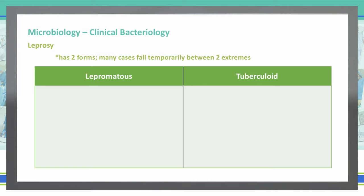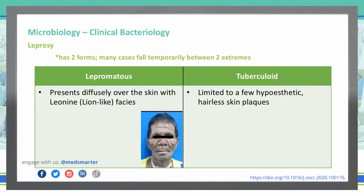The lepromatous form presents diffusely over the skin with a leonine, or lion-like, face. You can remember that the lion-like face is for lepromatous. As you can see in this picture here on the left, this patient kind of has that lion look to his face — that is a classic characteristic of lepromatous leprosy.